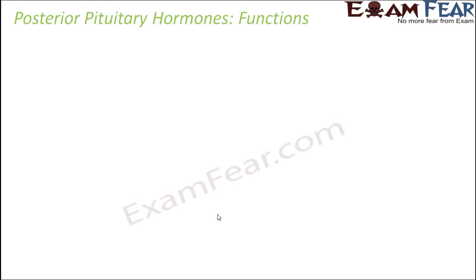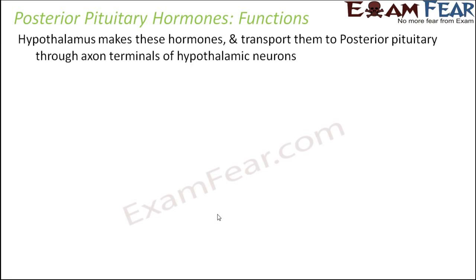Now let us look at the posterior pituitary hormones. As mentioned before, posterior pituitary is nothing but a part of the hypothalamus. So the hormones secreted by them are actually secreted by the hypothalamus. The hypothalamus makes these hormones and transports them to the posterior pituitary through the axon terminals of hypothalamic neurons. In one way we can say they are secreted in the posterior pituitary because the axon terminal of the neuron ends there, but actually they are synthesized by the hypothalamus.